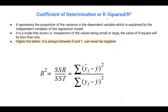Coefficient of determination, also known as R-squared, represents just the percentage or proportion of the variance in the dependent variable — this is our response variable — which is explained by the independent variables, these are the predicted variables of the regression model. In other words, we are measuring the strength of the relationship between the model and the dependent variable.